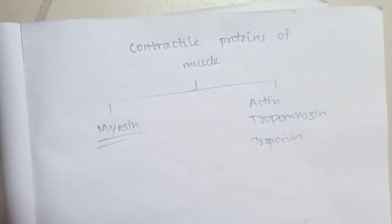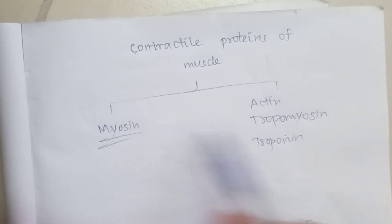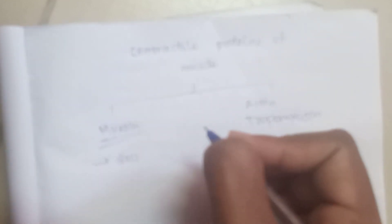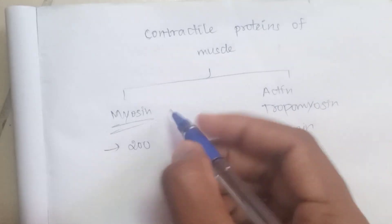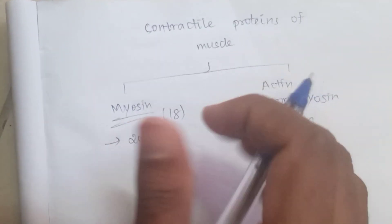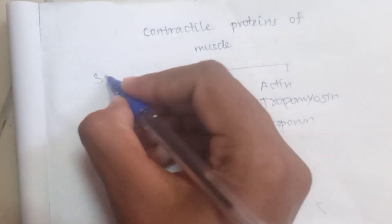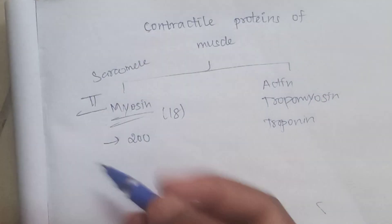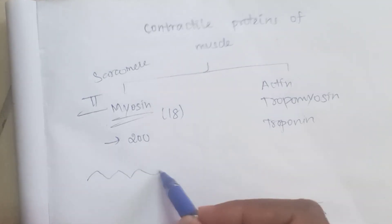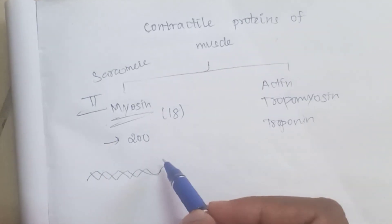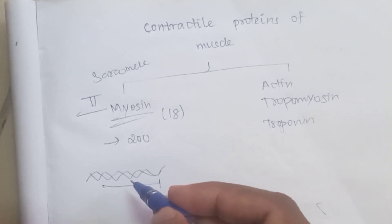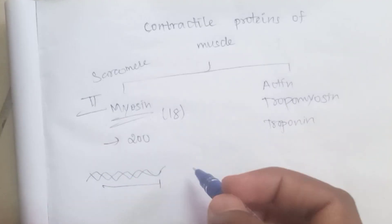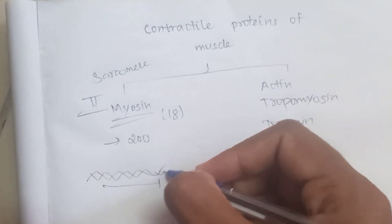We are going to talk about myosin filament. How many myosin molecules are there? There are 200 myosin molecules. We have 18 types of myosin. We are going to talk about myosin type 2. The myosin molecule has a heavy chain and a light chain.